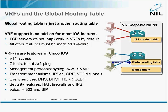If an IOS feature is not specifically caring about VRFs — if it's not VRF-aware — then it will use the global routing table.